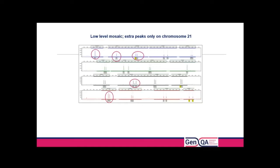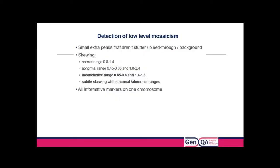You can see very low-level mosaicism with extra peaks that would not correspond with a stutter peak — for example a small peak on the wrong side of the allele to be a stutter. You would be looking for small extra peaks that aren't where you'd expect stutter, skewing of the allele ratios, and subtle skewing where the larger allele shows preferential amplification when you'd expect the smaller allele to amplify preferentially from PCR. When seen consistently across one particular chromosome but not the others, it indicates something is happening with that specific chromosome.